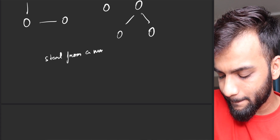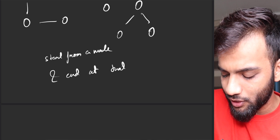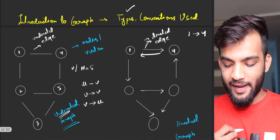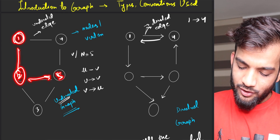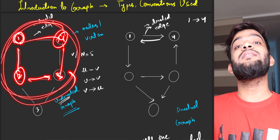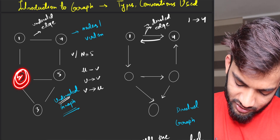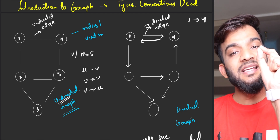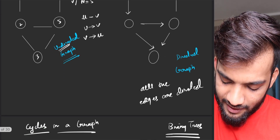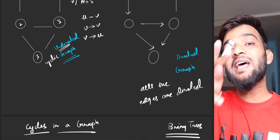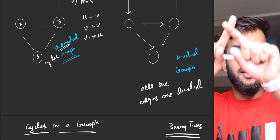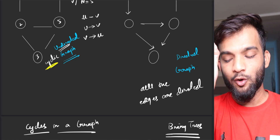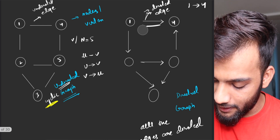A cycle means: if you start from a node and end at that same node, that is the definition of a cycle. If you carefully observe — can I say this has a cycle? Yes, because if you start from 1, go to 2, go to 5, go to 4, and come back — there is a cycle. There can be multiple cycles in a graph. If there is a single cycle in an undirected graph, you generally call it an undirected cyclic graph.